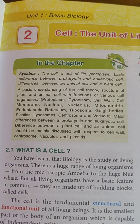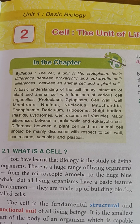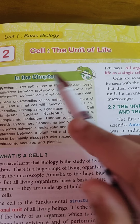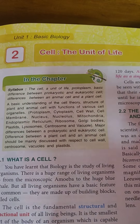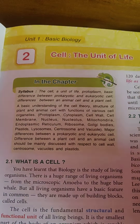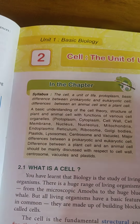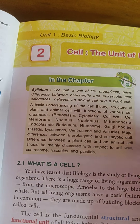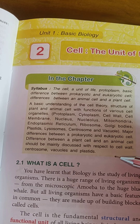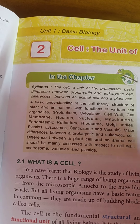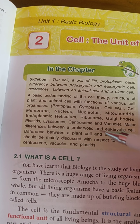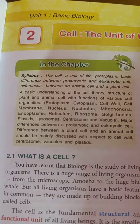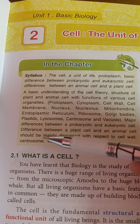Greetings everyone. We start our biology explanation from today. The first chapter that we will be doing is 'Cell: The Unit of Life.' The scope of the syllabus is we have to learn about all the different types of organelles present in the cell, and we have to find out or study about the major differences between prokaryotic and eukaryotic cells.